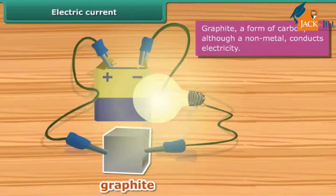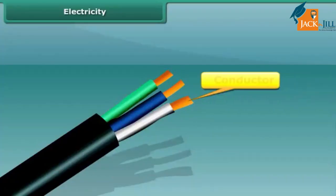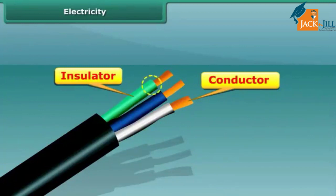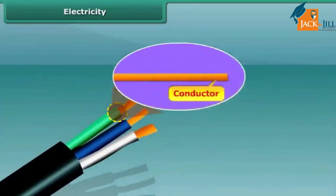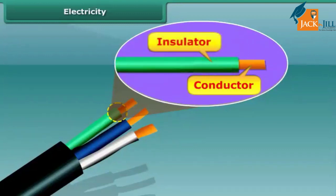Both conductors and insulators are important while using electricity. The conductors like copper or other metallic wires are used for electric supply, but at the same time these metallic wires are coated by insulating materials like plastic or rubber for safety.